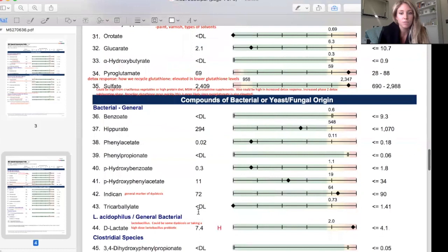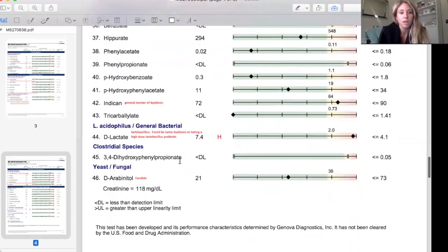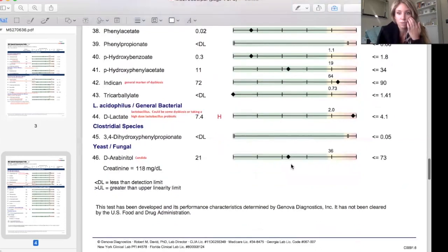Moving down to bacterial dysbiosis, Indocan is a general marker of dysbiosis. This is high, borderline high, as well as our D-lactate is higher. D-lactate is a marker of lactobacillus or dysbiosis in general. So if this patient was taking a lactobacillus probiotic, that could be the reason that it was high. If not, then we're looking at general dysbiosis and wanting to treat that as well. Her marker for Candida was normal, so we're not concerned about Candida in this patient. Candida was something that came up in the patient history, so I was glad to see this within normal range.